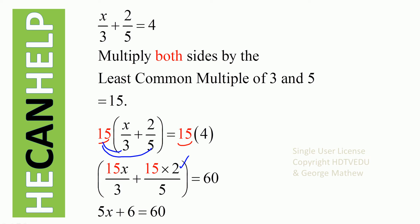15x divided by 3. 3 goes into 15 five times, so you get 5x. How about 5 going into 15? 5 goes into 15 three times. What is 3 times 2? 6. That's what we have here.